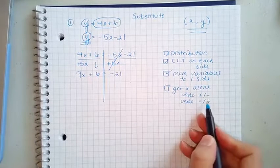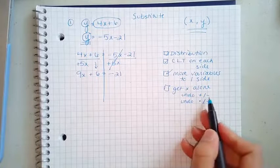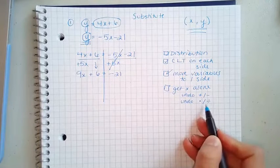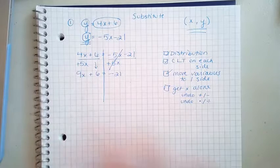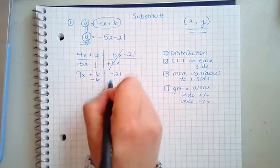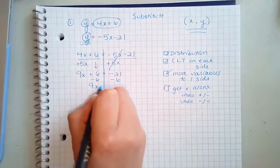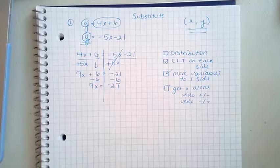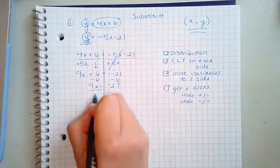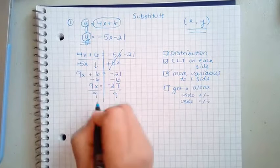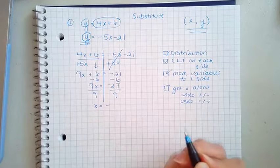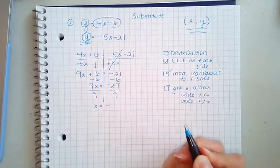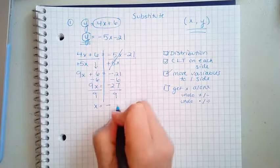Now I'm gonna get X by itself. I'm gonna undo my addition or subtraction, and undo my multiplication or division. So remember, I want everything close to X. I want to get it away. So I'm gonna subtract 6 from both sides. And then I'm gonna divide both sides by 9. A negative divided by a positive is gonna be a negative number. And then 27 divided by 9 is 3.